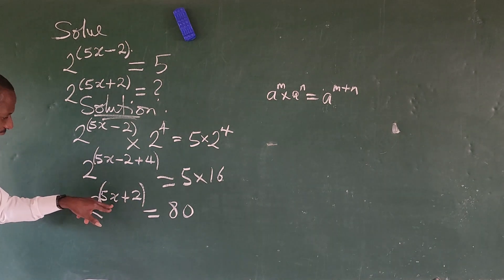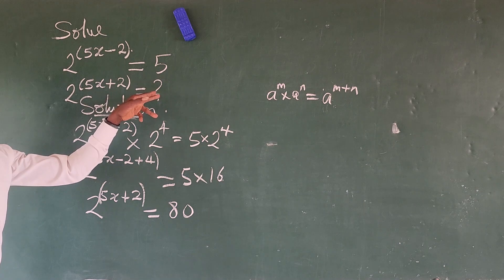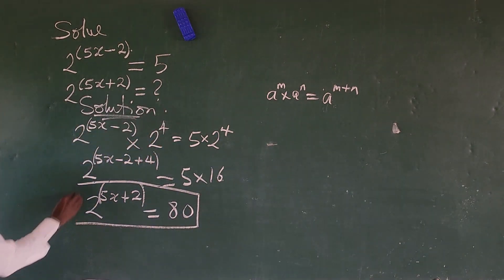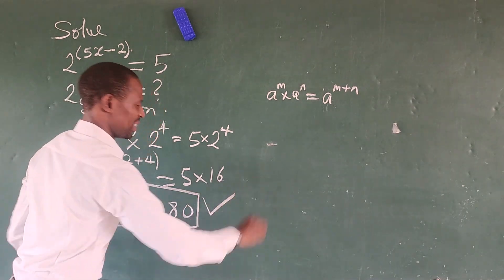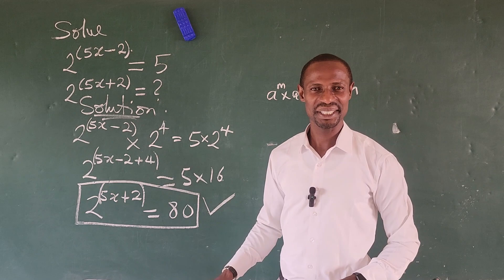So 2 to the power of 5x plus 2 is what we are asked to look for here. So this is your final answer. 80 is the answer to this exponential expression.